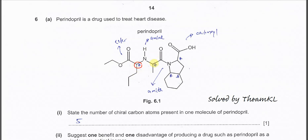This one is also another chiral carbon — one group, two group, three group, another H. And this one will be another chiral carbon: one group, two group, three group, another H.